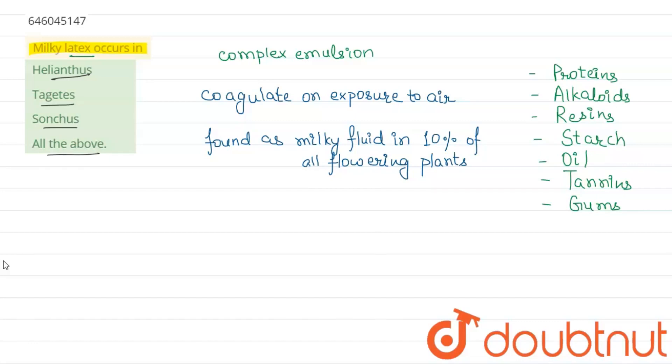And in most plants, latex is white, but some have yellow, orange, or scarlet latex also. And talking about where it is found, it is mostly produced in the Asteraceae or the sunflower family.